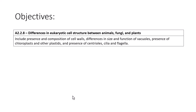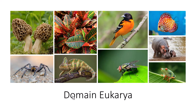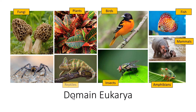We'll also cover the presence of cilia and flagella. The first thing we need to do is understand what the domain Eukarya really entails. It includes all organisms belonging to fungi, plants, and animals including birds, fish, mammals, amphibians, insects, reptiles, and arachnids.